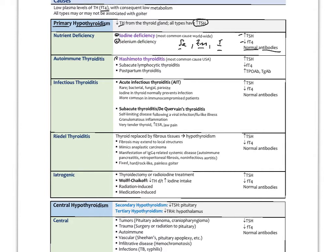Autoimmune thyroiditis — Hashimoto's — is the most common cause of hypothyroidism in the U.S. That's going to have a high TSH, low free T4, and elevated autoantibodies, especially anti-TPO and thyroglobulin. Variants of Hashimoto's include subacute lymphocytic thyroiditis, and postpartum thyroiditis that begins within one year after delivery.